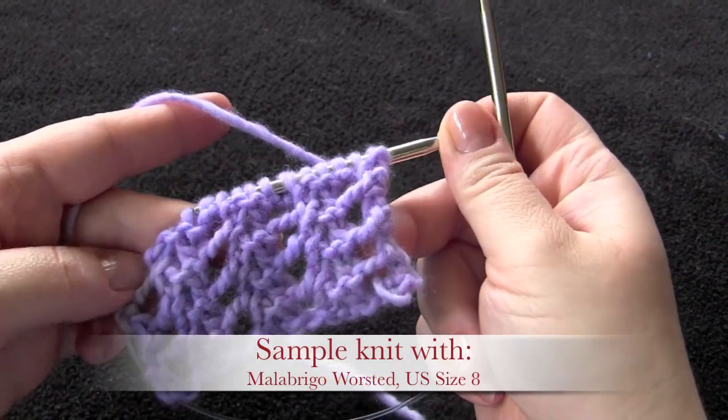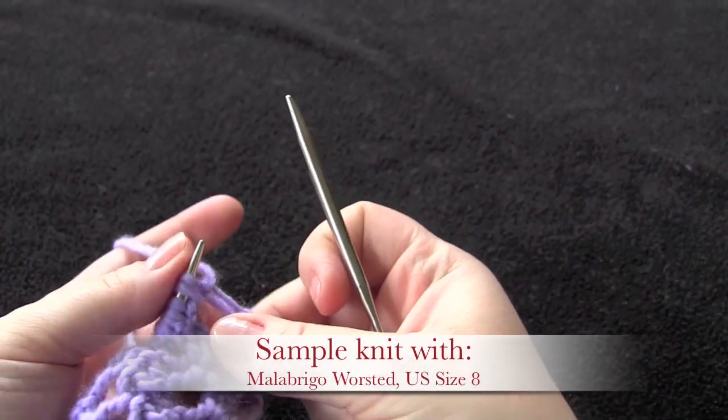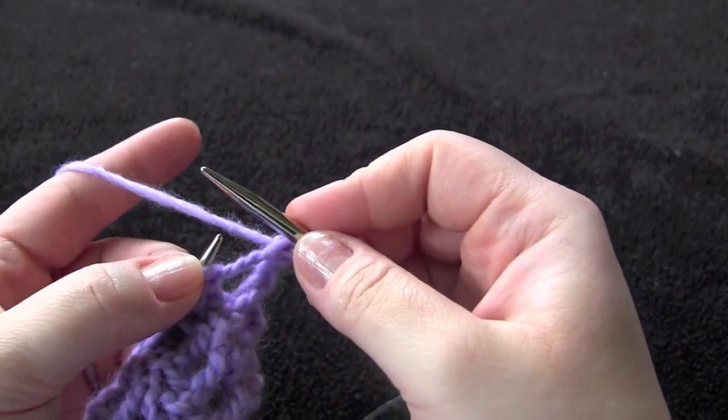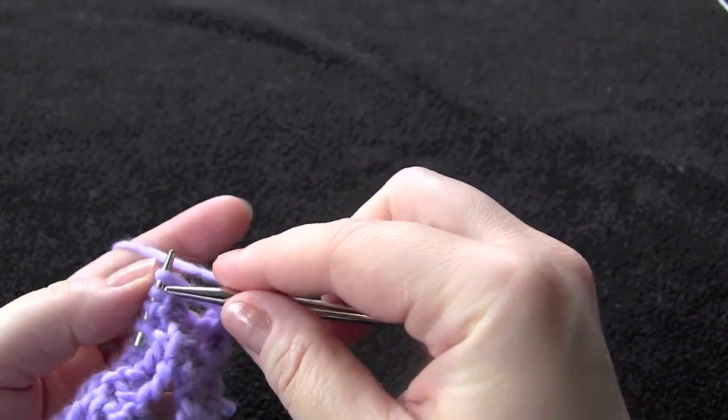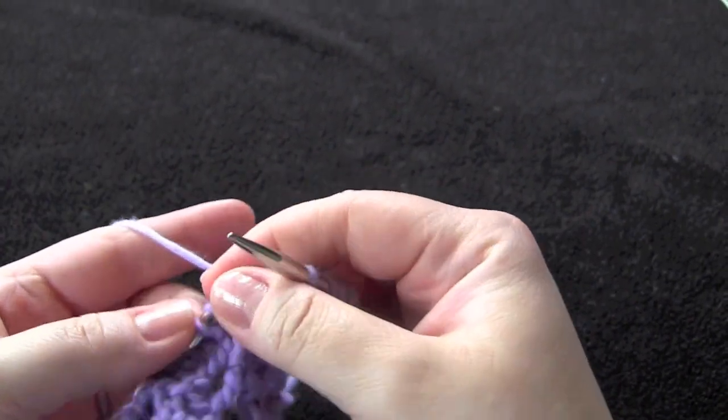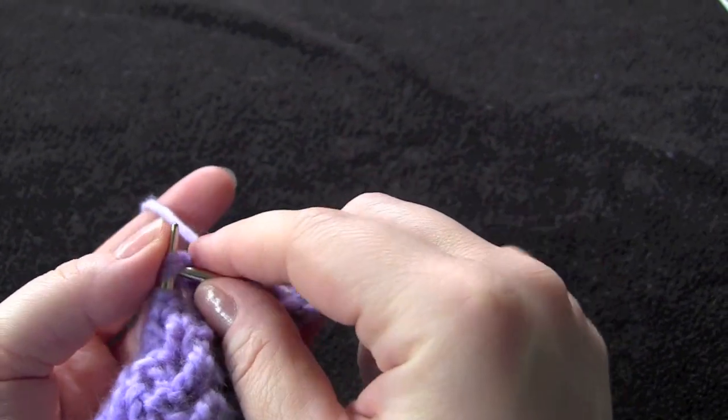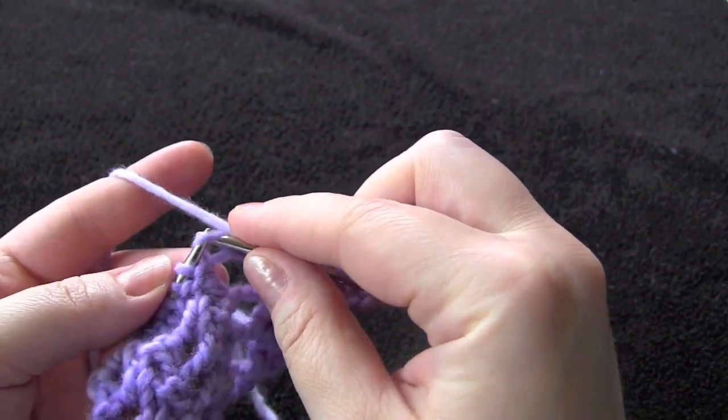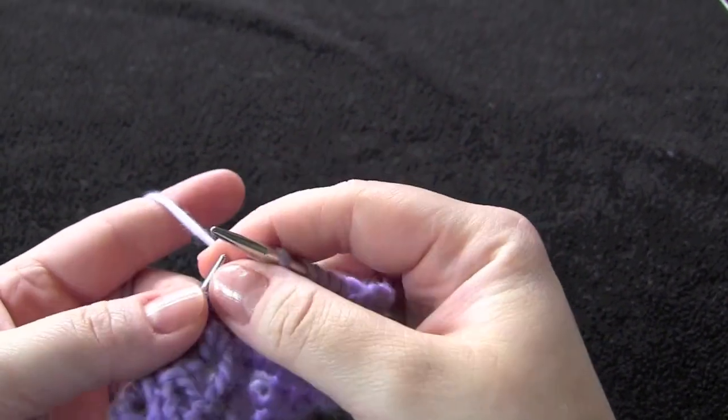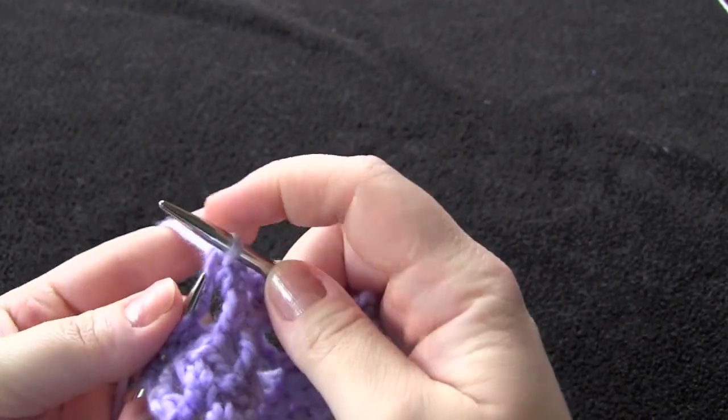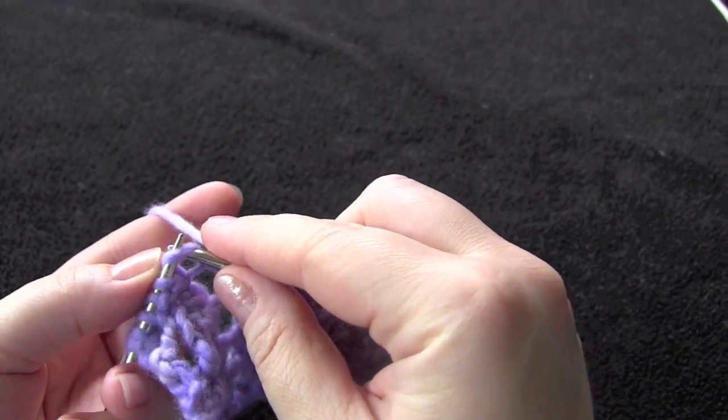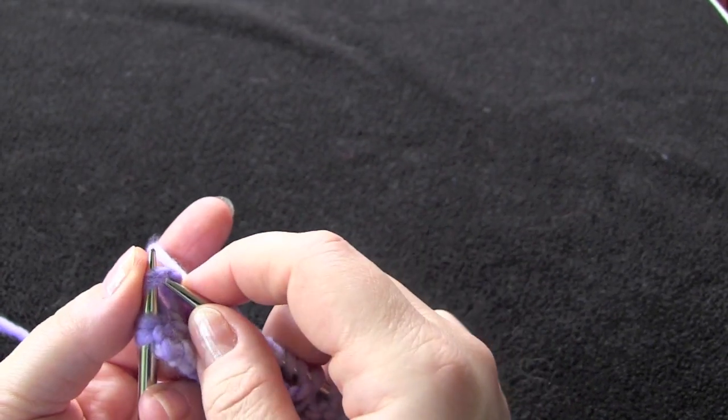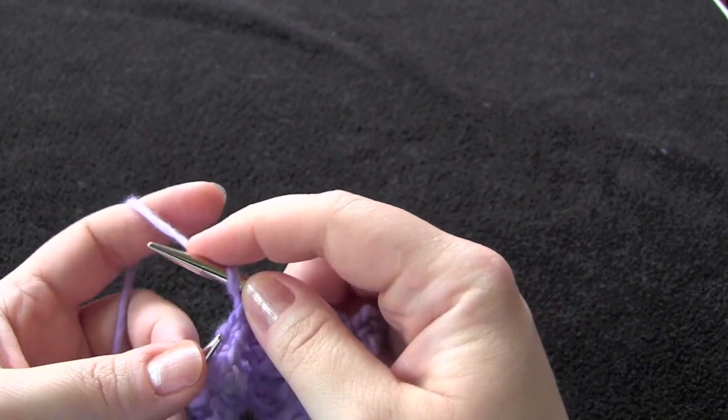For row one of the pattern, and this is the right side, you're going to knit two together, make a double yarn over, one, two, and then slip slip knit. And that is the repeat. Knit two together, yarn over twice, and slip slip knit. And that is the right side.